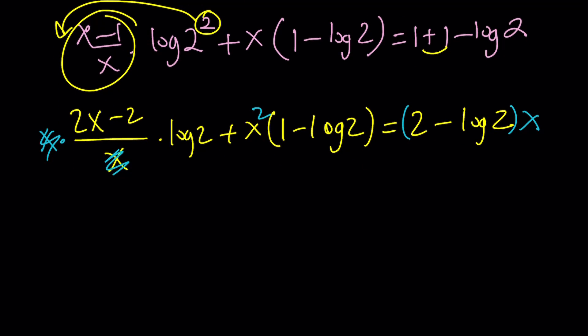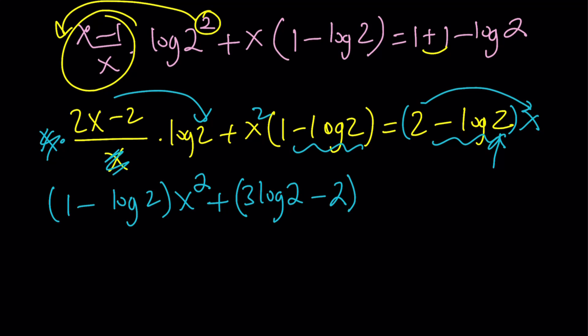Notice that this is the coefficient of x squared, so I'm going to write it as a quadratic formula. This is quadratic in x. It's going to be 1 minus log 2 x squared. Then plus, I need to collect the coefficients of x. Here I see 2 minus log 2, but that's going to be negated. And here I see 2 log 2. So this is going to bring another log 2 x, making 3 log 2 and then minus 2 x from here.